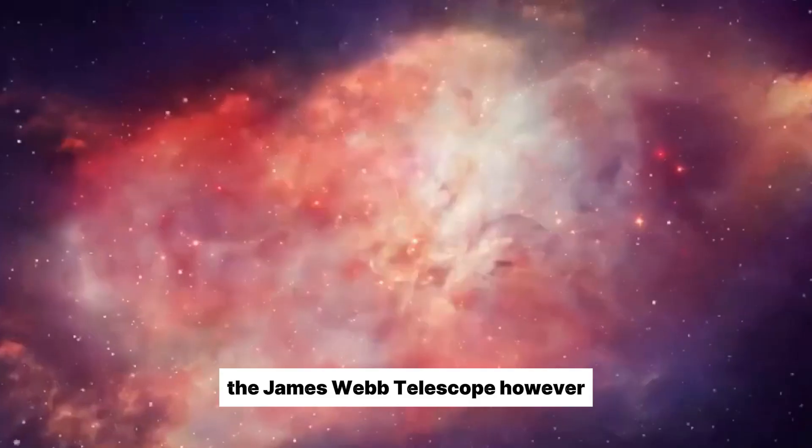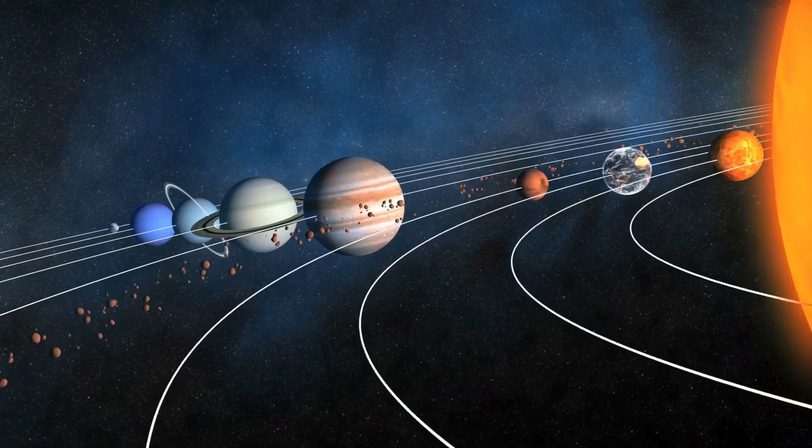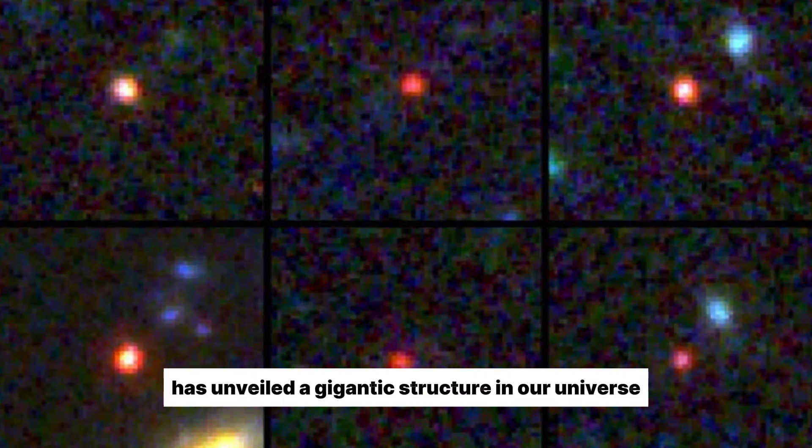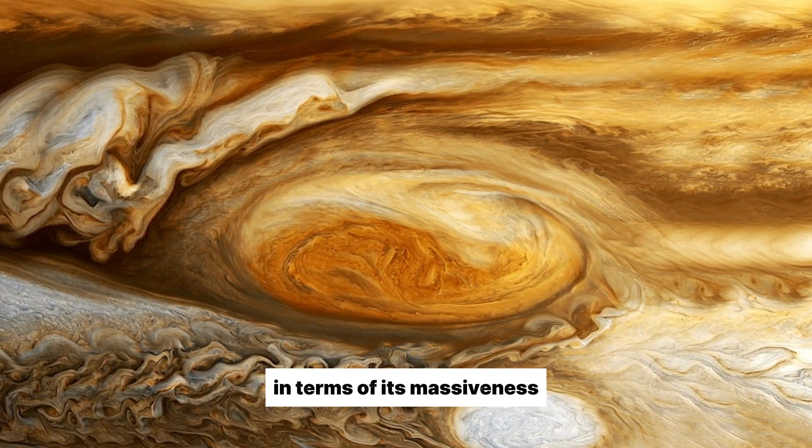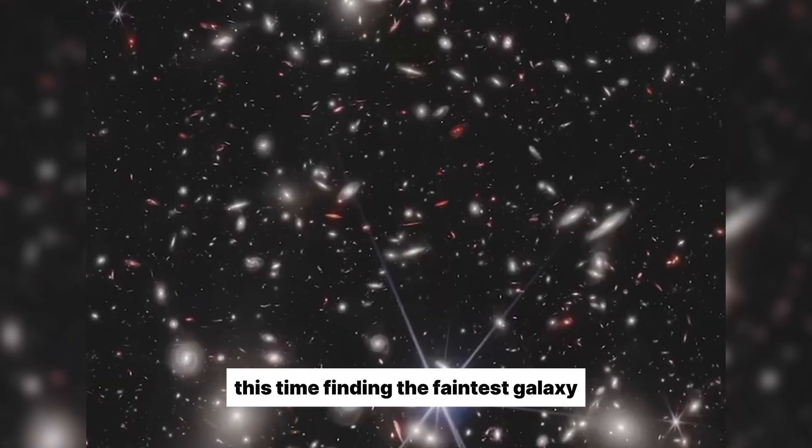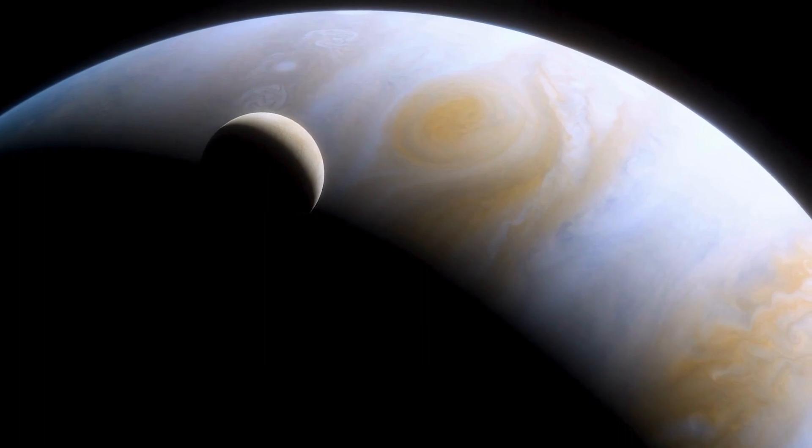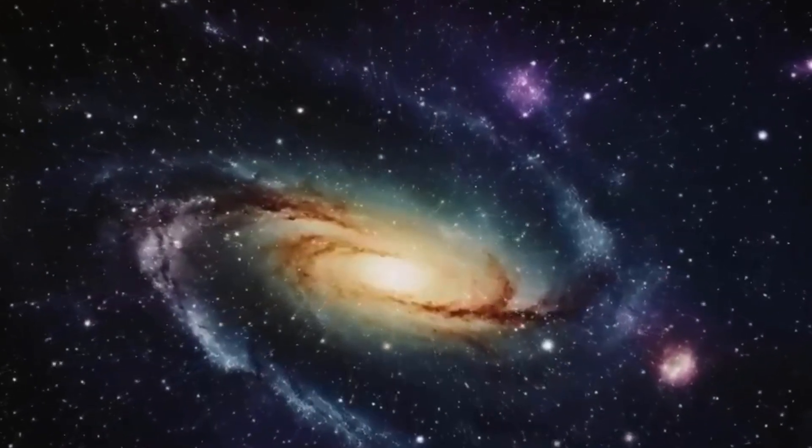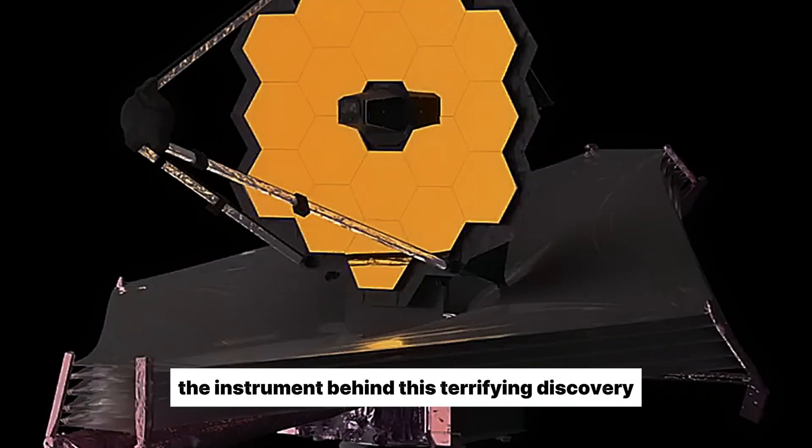However, recent events have sparked intense debate within the scientific community. The James Webb Telescope, one of the most powerful instruments for space exploration, has unveiled a gigantic structure in our universe that surpasses all expectations in terms of its massiveness. The James Webb Space Telescope has made another incredible discovery, this time finding the faintest galaxy with potential involvement of extraterrestrial beings in its creation. Keep watching, as we will explore the nature of this massive structure, its possible origin, and the implication of its existence. But it's important to first understand the instrument behind this terrifying discovery.